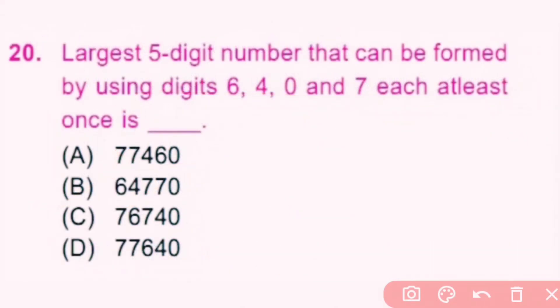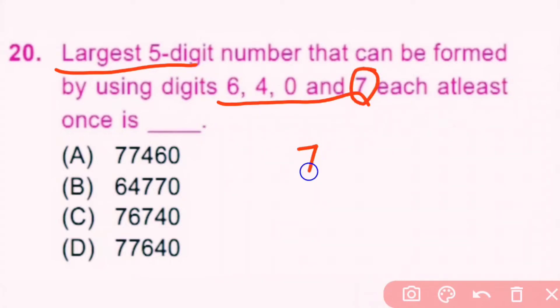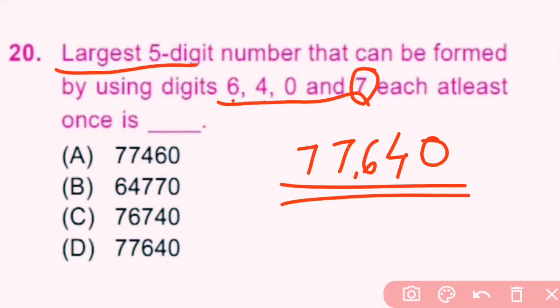Question number 20. The largest 5-digit number that can be formed by using digits 6, 4, 0 and 7, each at least once, is dash. We are given 4 digits and we have to form the largest 5-digit number. So we take the biggest digit 7 two times, then 6, then 4, and last 0. So the largest 5-digit number is 77,640. D is the correct answer.